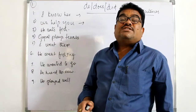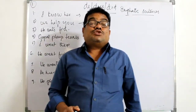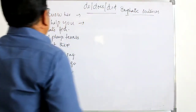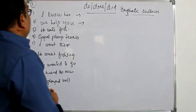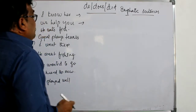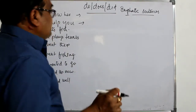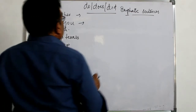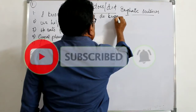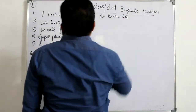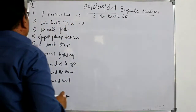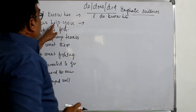Now I have taken some examples covering both simple present and simple past tense. Number one: the sentence is 'I know her.' Because it is in simple present tense, we must use do. So the emphatic sentence becomes: 'I do know her.'